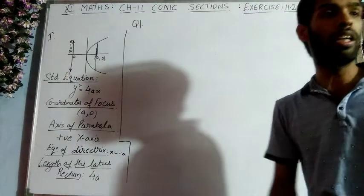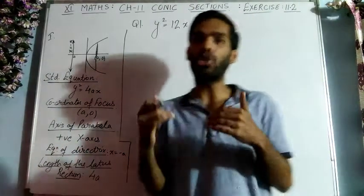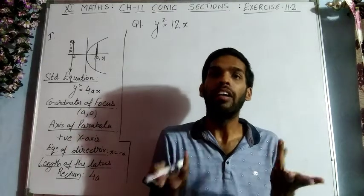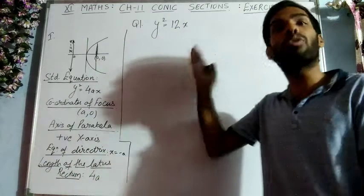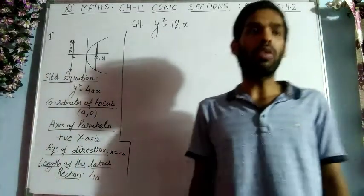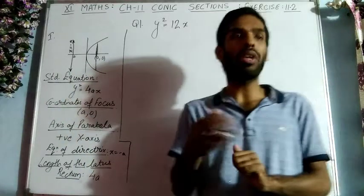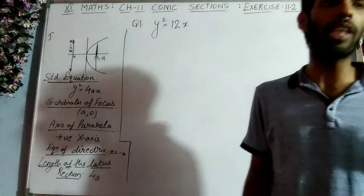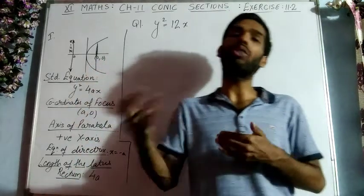The first question is y² = 12x. Looking at all the first 6 questions: Q1 is y² = 12x (first type), Q3 is y² = −8x (second type), Q2 is x² = 6y (third type, matching x² = 4ay), and Q4 is x² = −16y (fourth type, matching x² = −4ay). Just by comparison with the general equations you can immediately identify the parabola type.